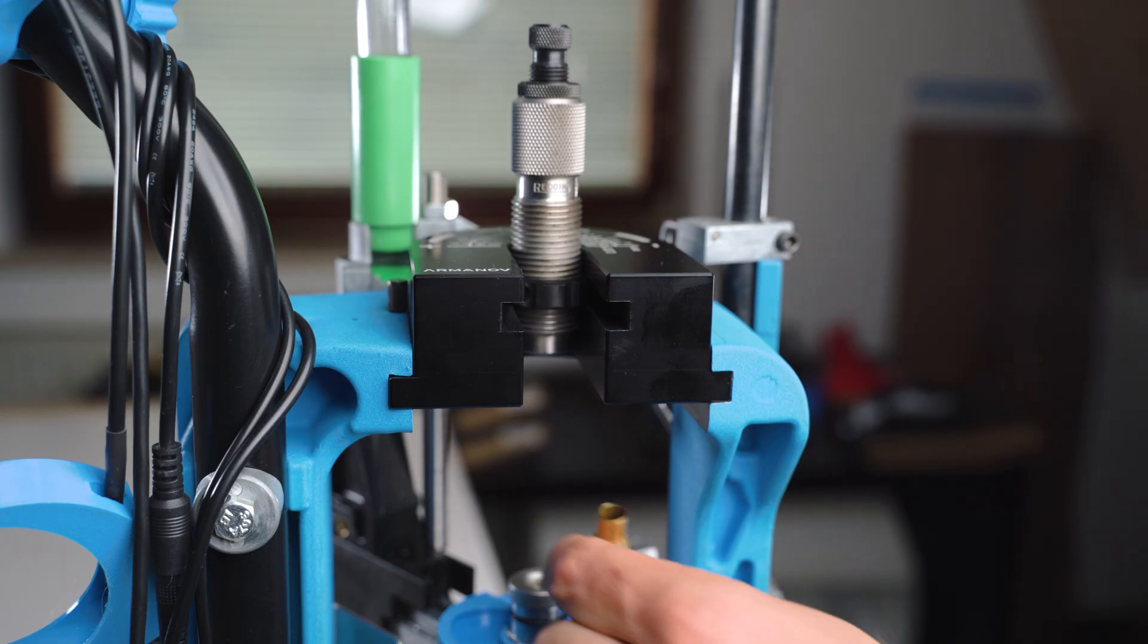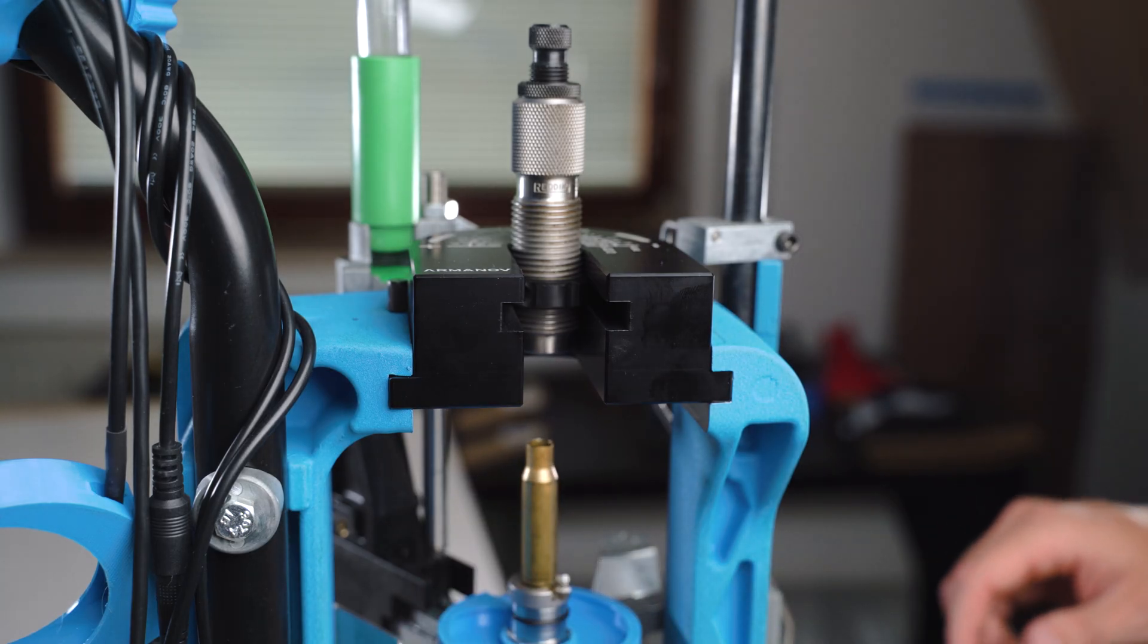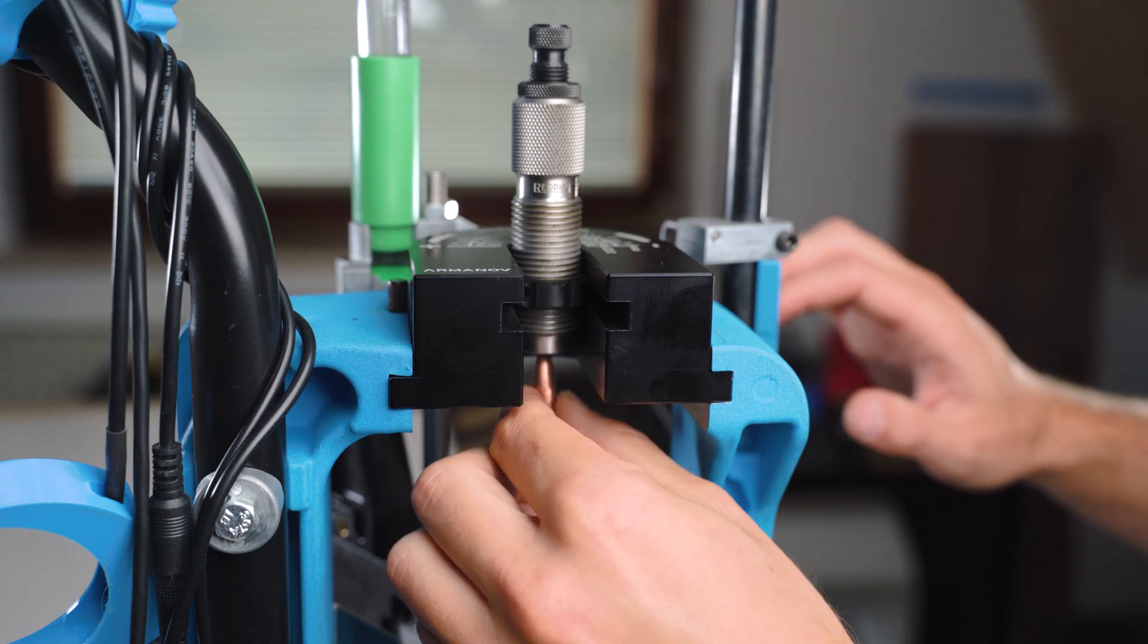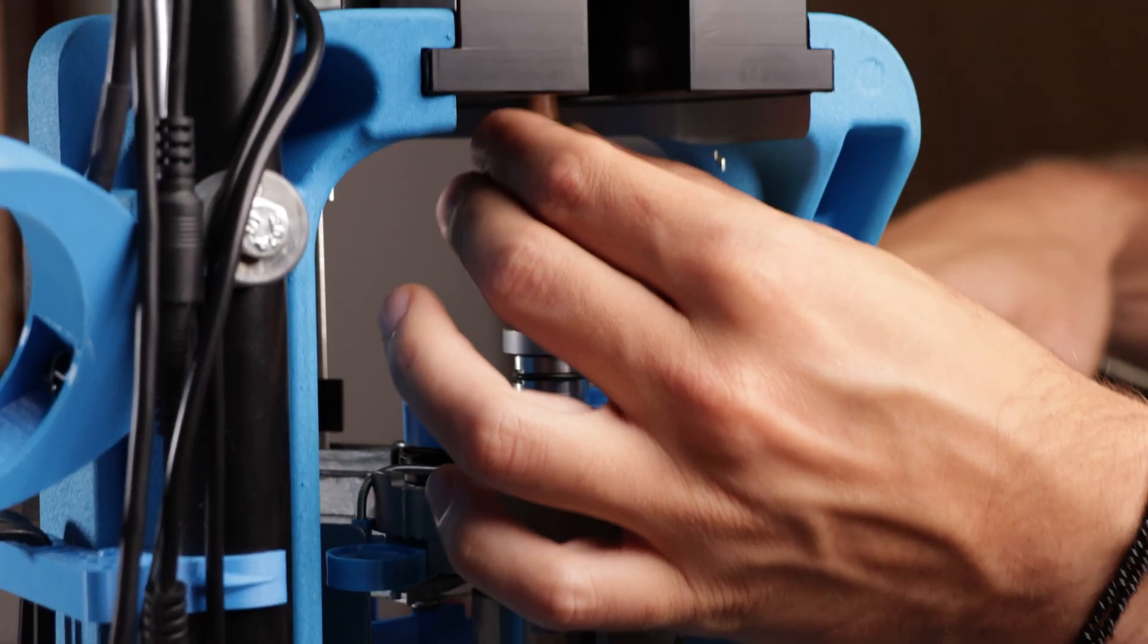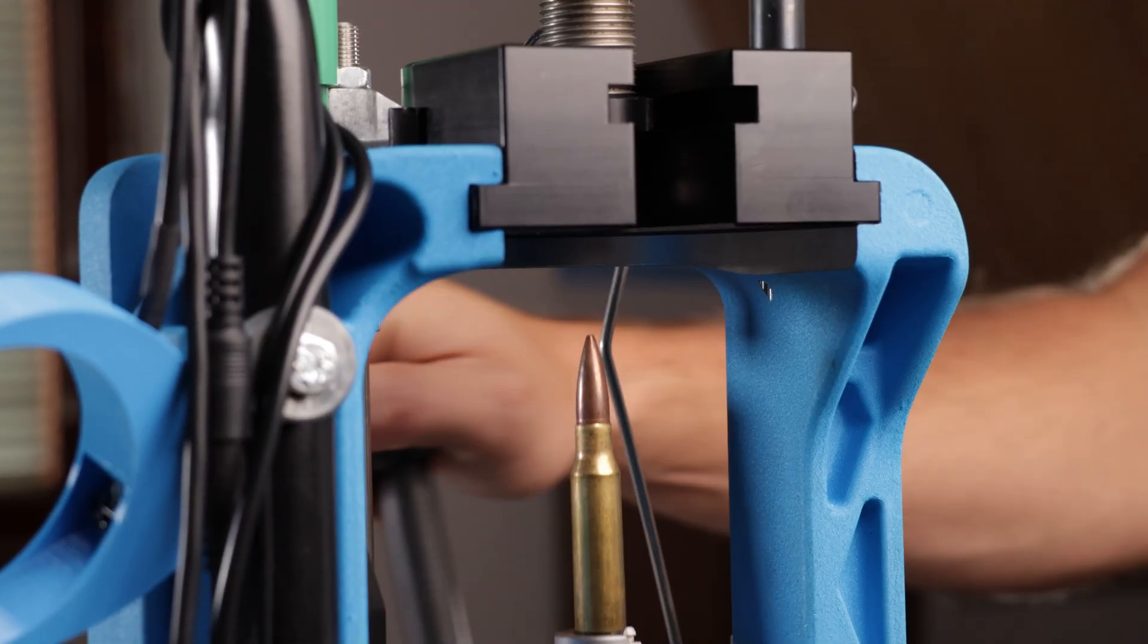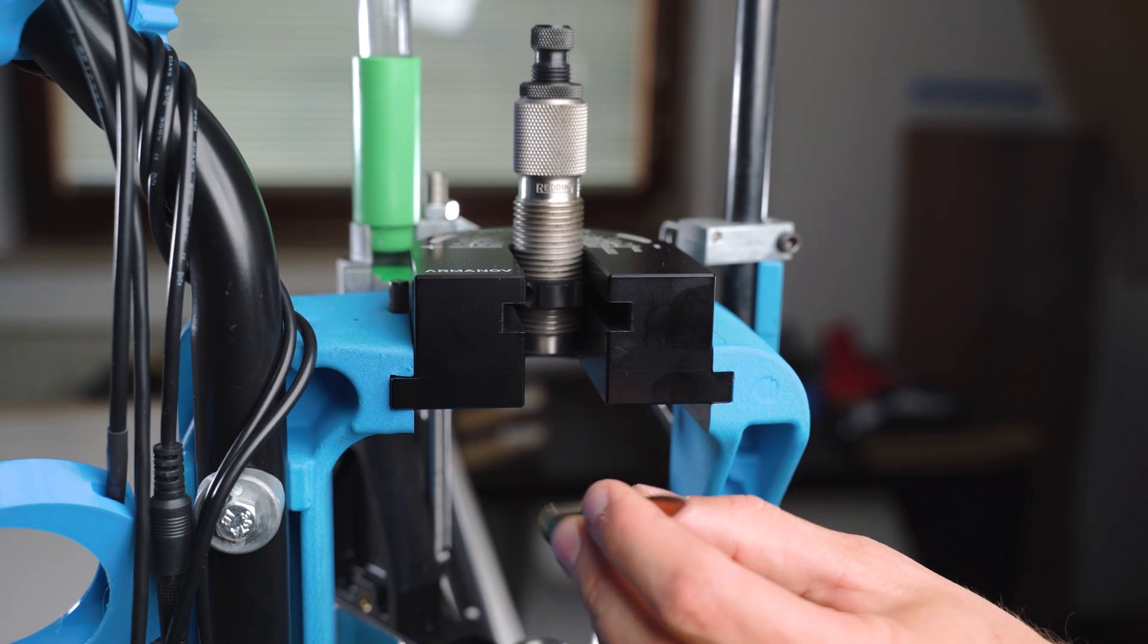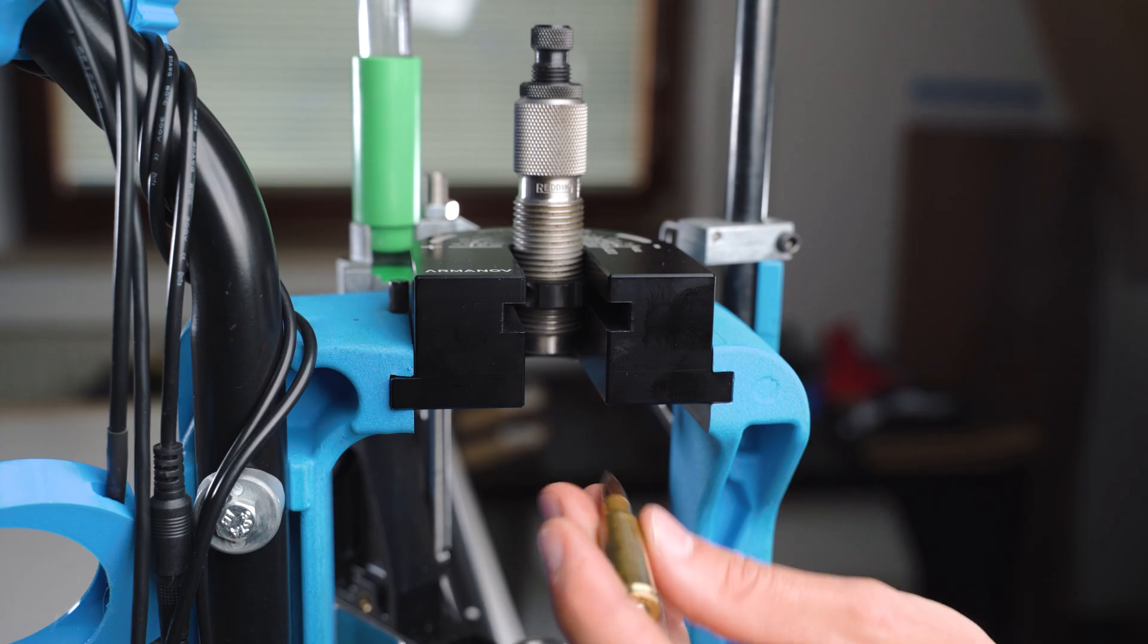I will also now show you one quick bullet seating of a 308 bullet, how simple it is and how the press operates. Just like this and you have a 308 bullet seated and ready to go.